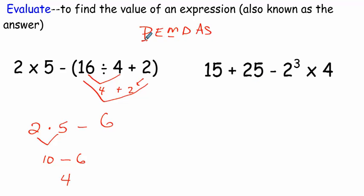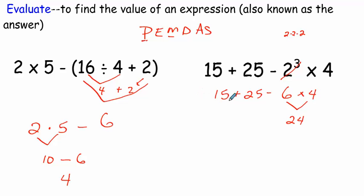Next problem. Any parentheses? No. Exponents? Yes — two to the third power. Remember, two to the third power means two times two times two. Two times two is four, times two is eight, so this equals eight. Then I rewrite the problem. Any multiplication or division? Yes, here's my multiplication — that equals 24. Rewrite the problem. Now I have addition and subtraction left; do whichever comes first in the problem. That would be 40 minus 24, which gives me 16.